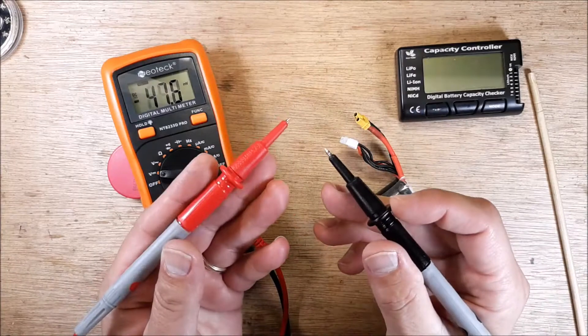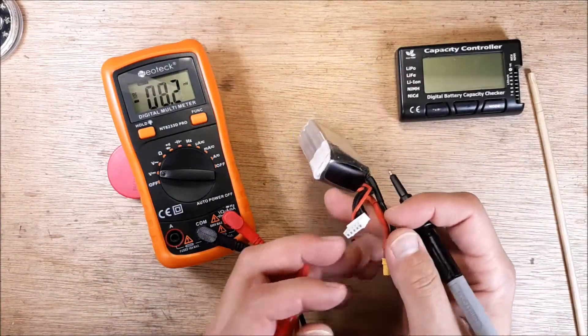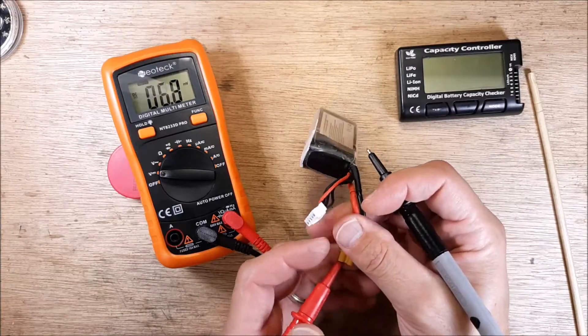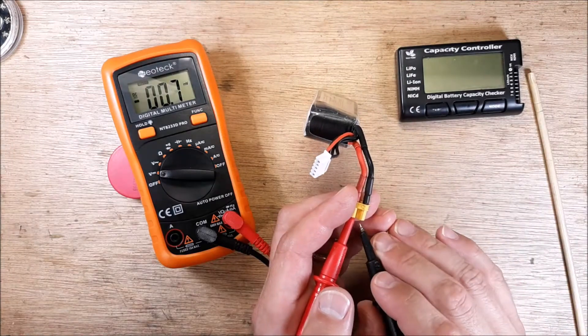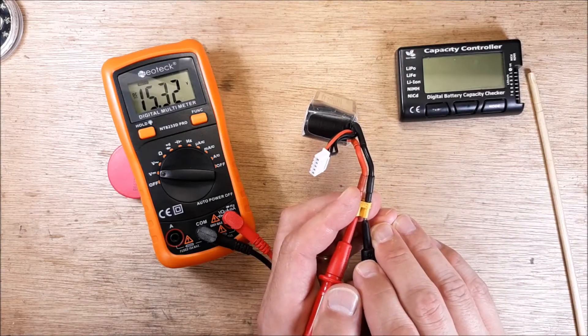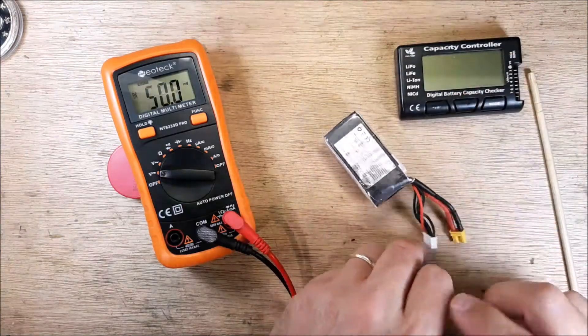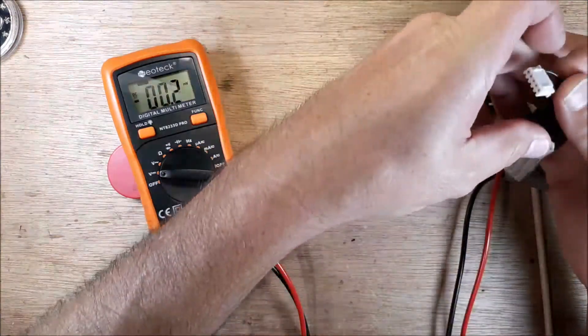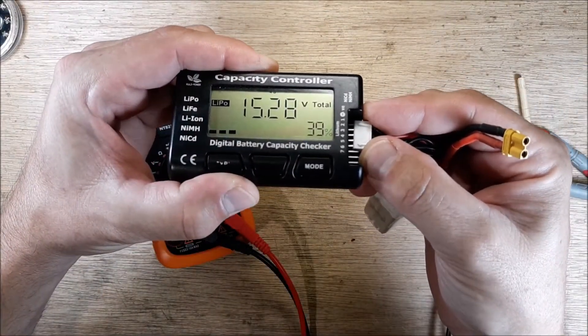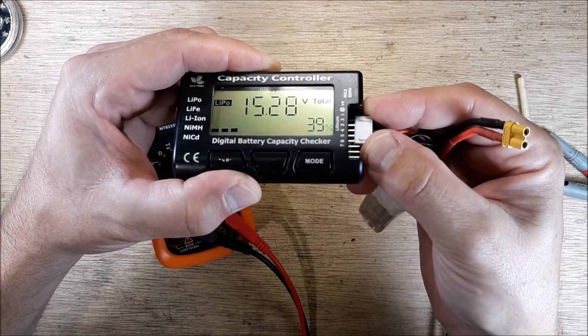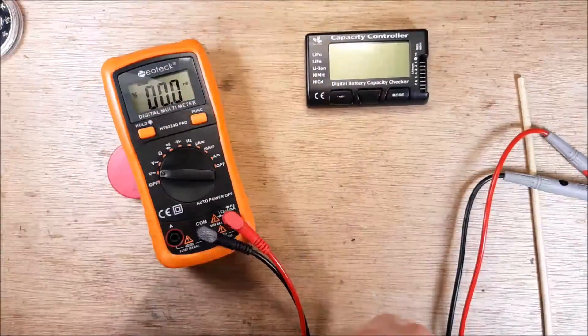We're going to take our two leads and put them inside the barrel of the LiPo. We have our hot in the positive barrel and then in the negative barrel: 15.32. So we know that is pretty accurate. 15.32 on the multimeter and we plug in here 15.32, 15.28. We're talking fractions of difference.